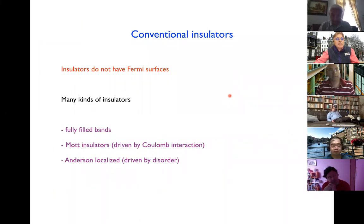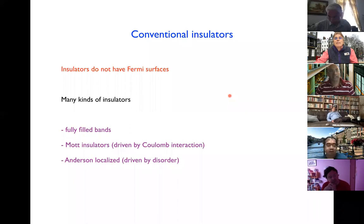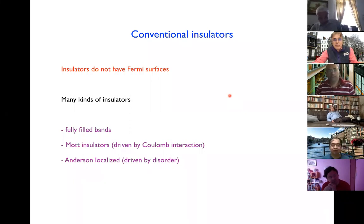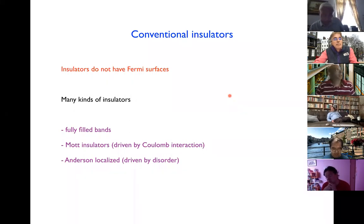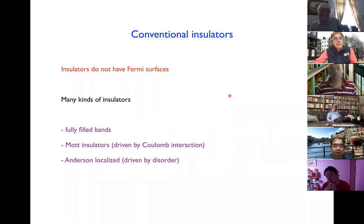Insulators are sharply distinguished from metals in terms of the characterization of the ground state. Insulators can arise due to many different reasons: band insulators with fully filled bands, Mott insulators driven by Coulomb interaction, Anderson insulators driven by disorder, or some combination of these effects.